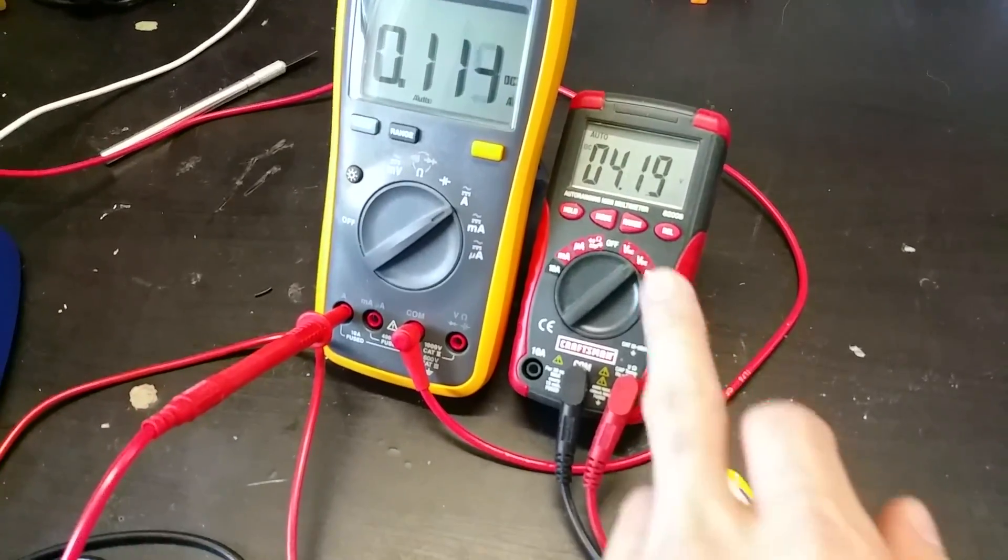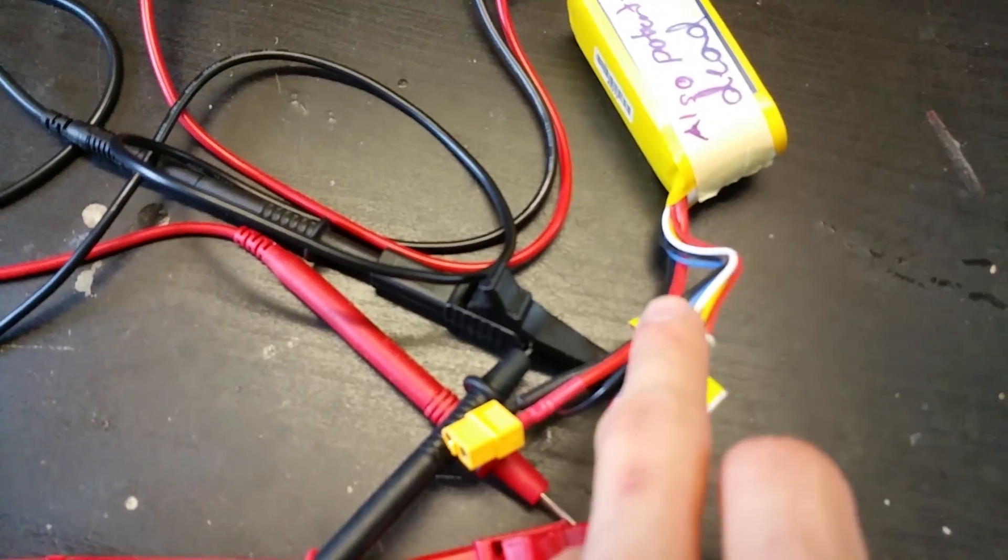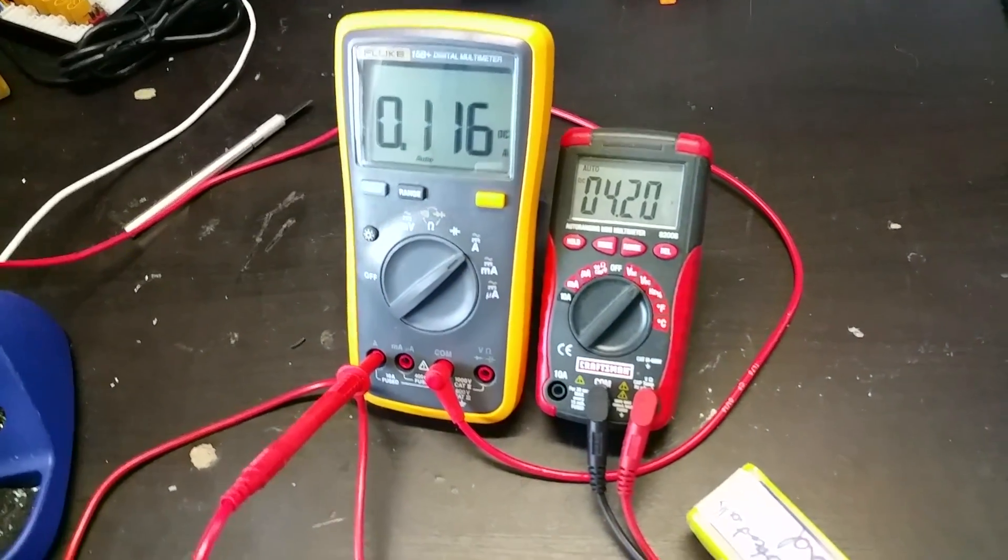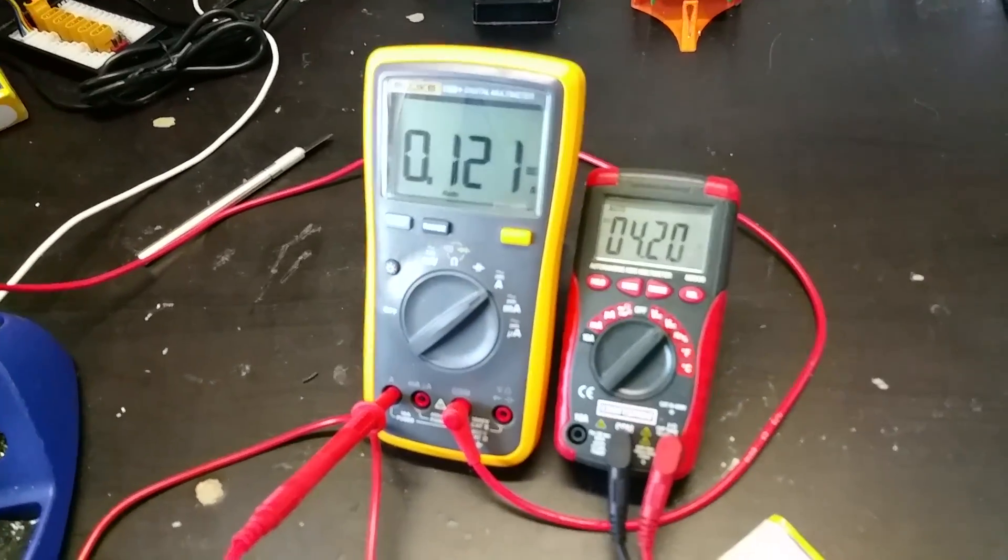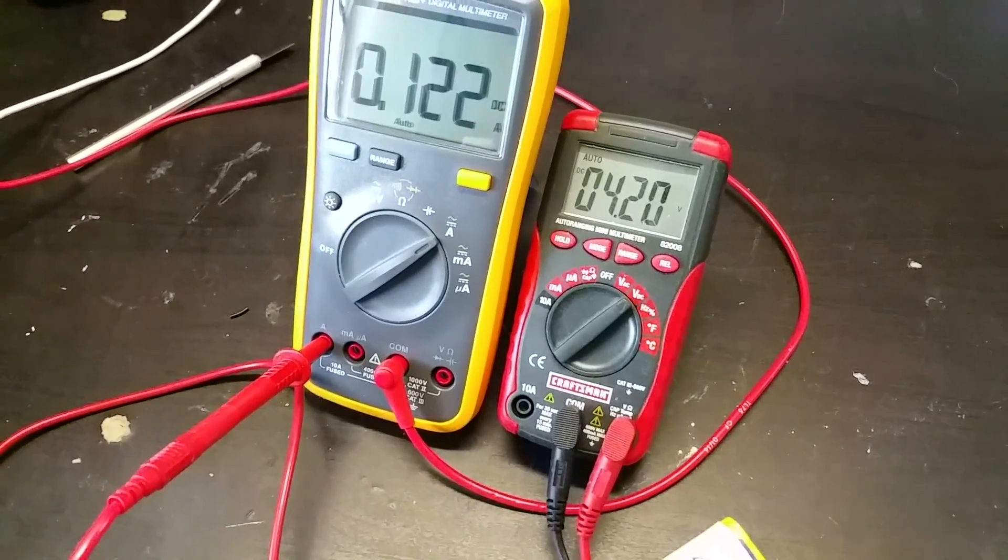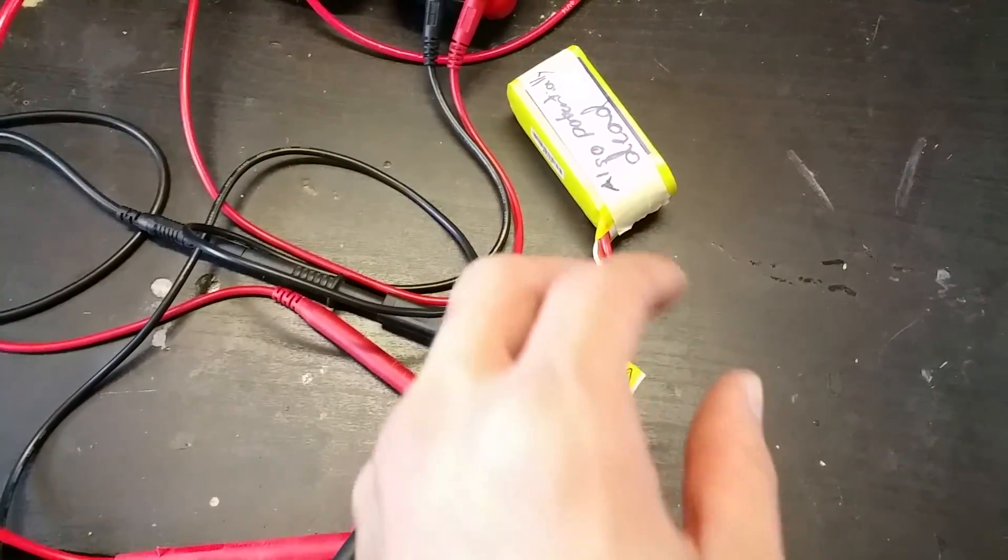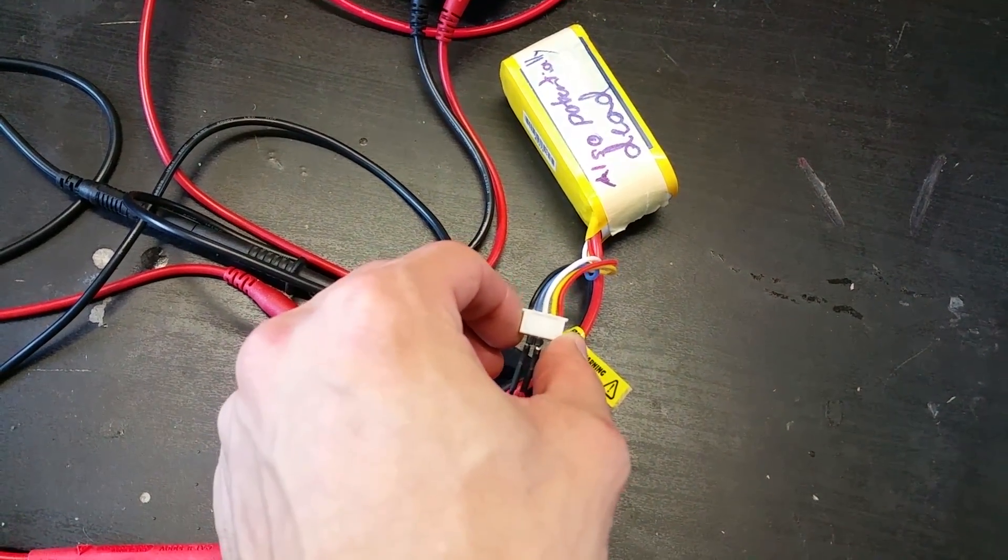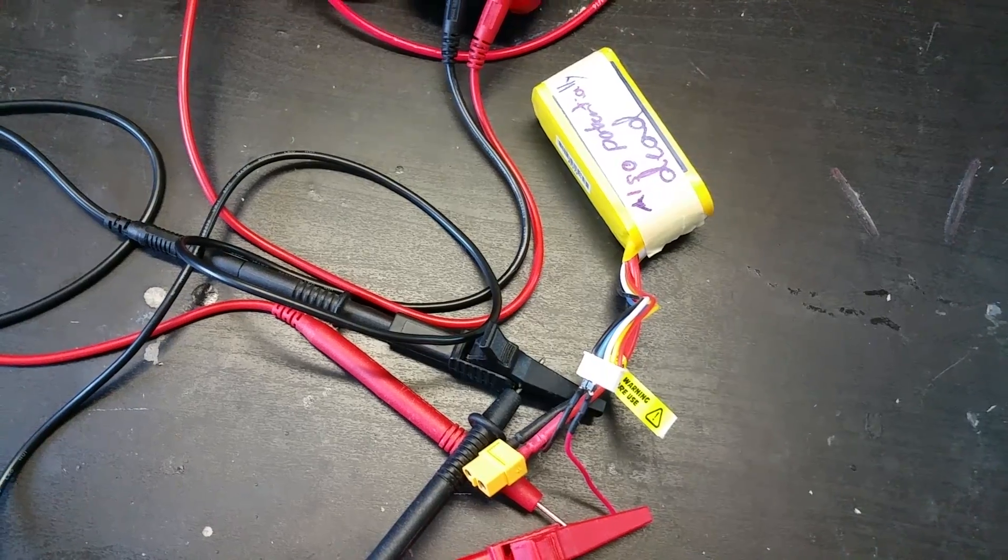So it looks like this cell's fully charged, we've got 4.2 volts coming out of it, or going into it at least, so it's pretty high up and our amperage has dropped down to 100 milliamps. So I think it's ready to check the voltage across all the different cells in this and then toss this on the balance charger just to finish it up.